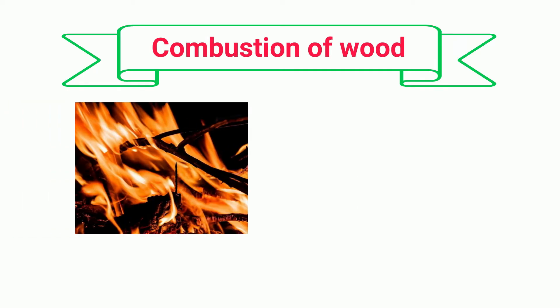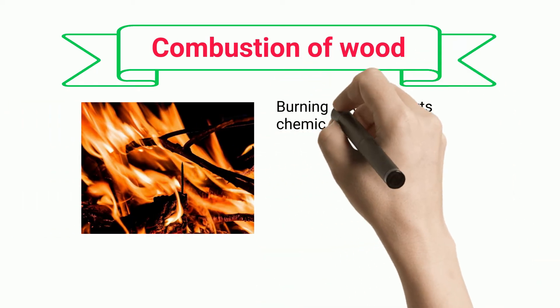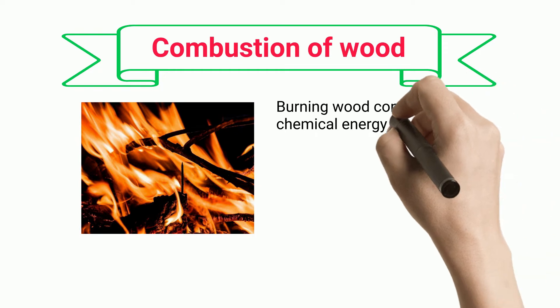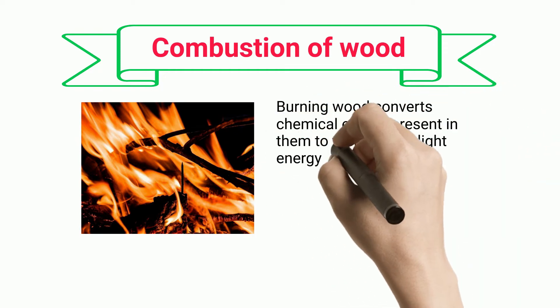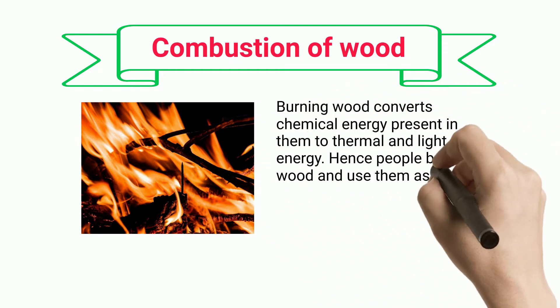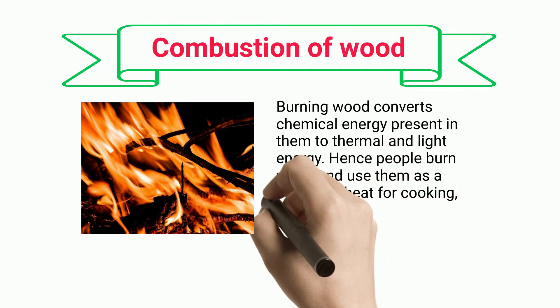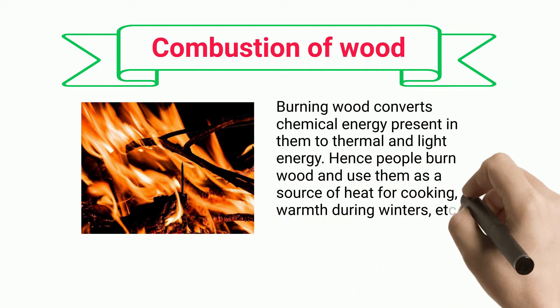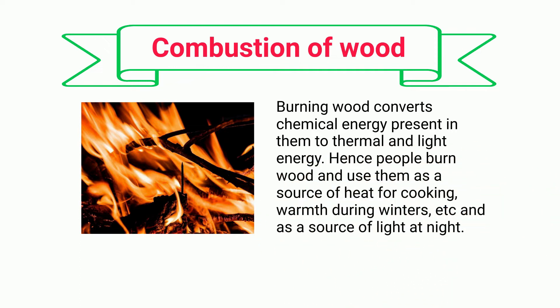Combustion of Wood. Burning wood converts chemical energy present in them to thermal and light energy. Hence people burn wood and use them as a source of heat for cooking, warmth during winters, etc., and as a source of light at night.